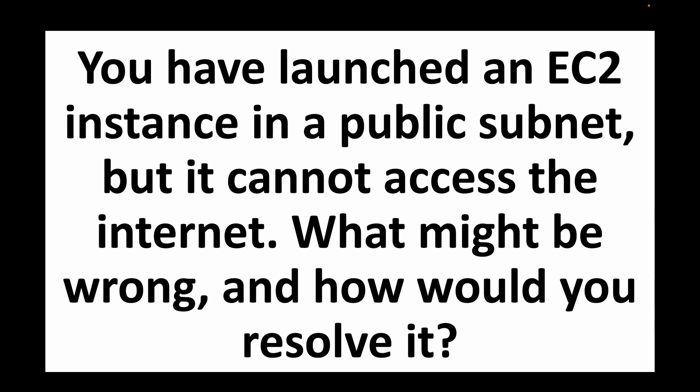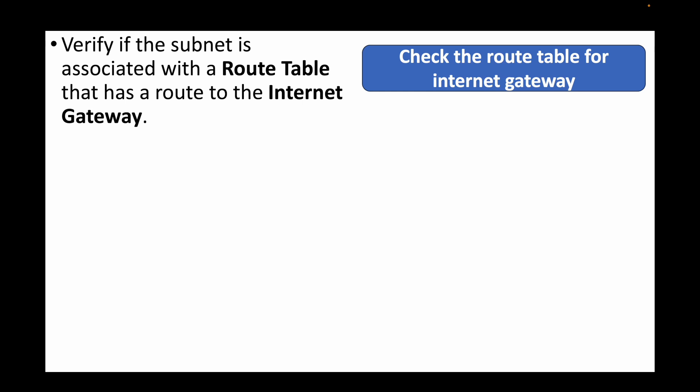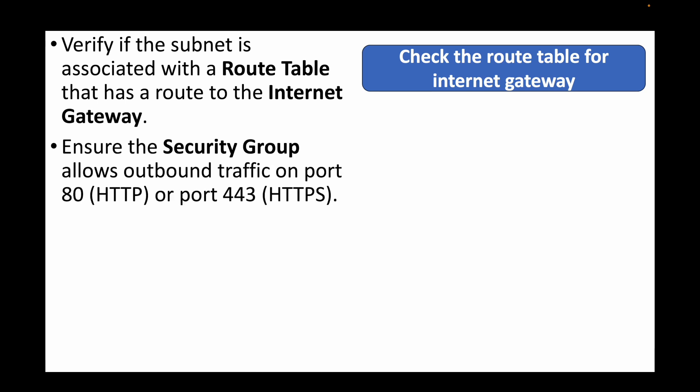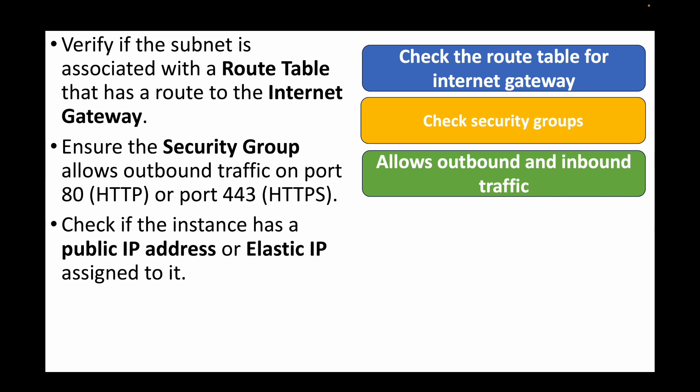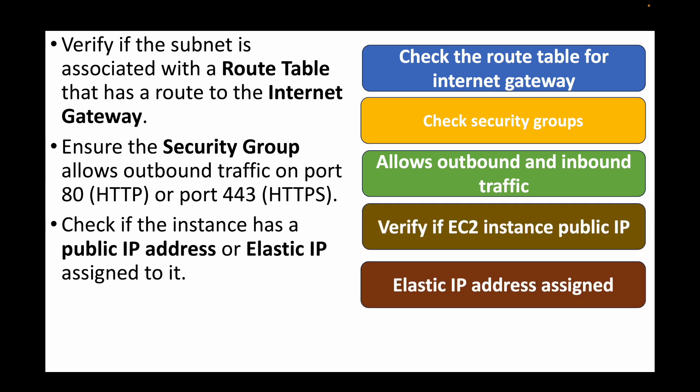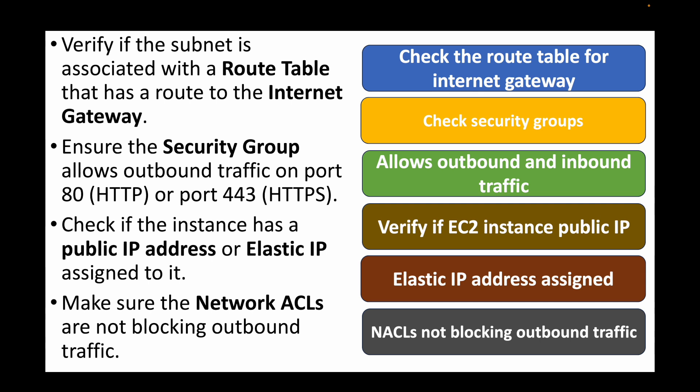The next question: you've launched an EC2 instance in a public subnet but it cannot access the internet — what might be wrong and how would you resolve it? We need to verify the VPC configuration, checking that the route tables have a route to the internet gateway. We need to ensure security groups have appropriate inbound and outbound rules. Since the instance is in a public subnet, we need to check that it has a public IP or Elastic IP address assigned. We also need to ensure the network ACLs are not blocking outbound traffic.